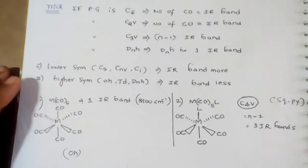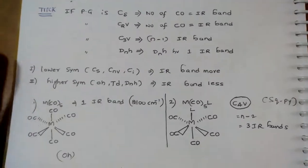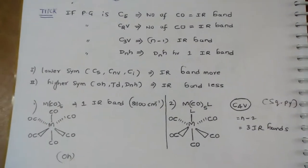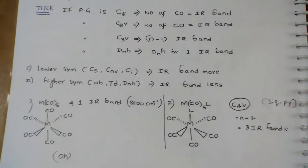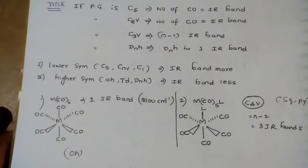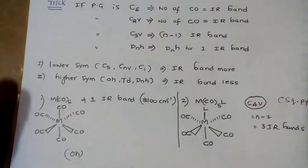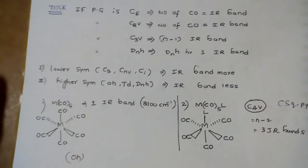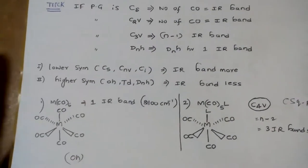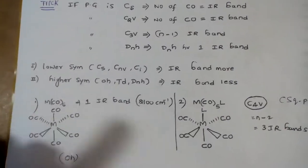Similarly, we'll discuss some examples. For MO6, the IR band is only one because it's a perfectly octahedral complex. Here, all CO ligands are in the same environment. Therefore, they give only one IR band.